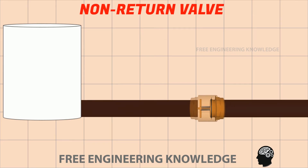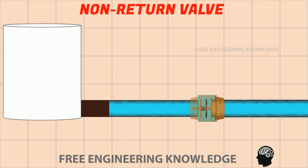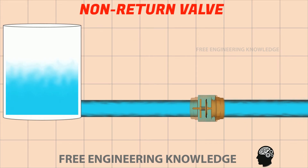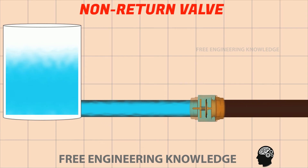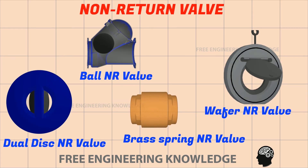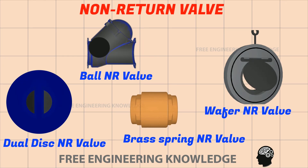When water enters through the inlet port of the non-return valve, the movable disc valve is pushed by the water pressure and the valve opens. Similarly, when water pressure drops at the inlet port, the movable disc valve is pushed back by the spring and the valve closes. In another video we will see the operating system of another type of non-return valve.